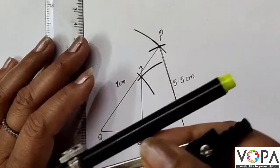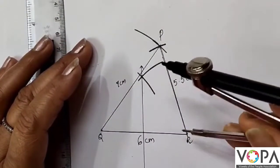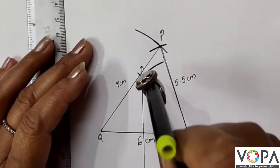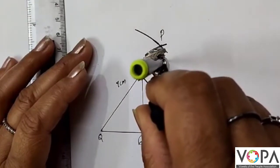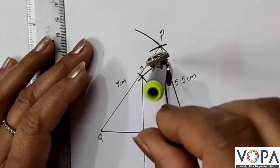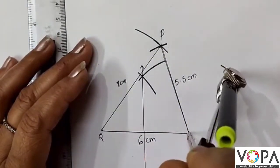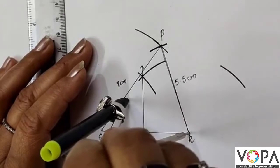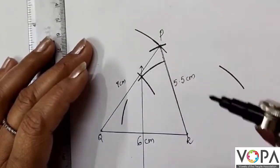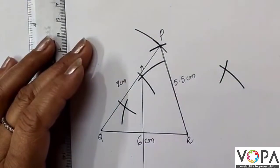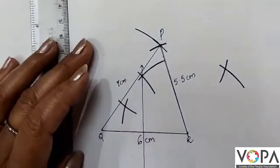Then for PR or PQ, any one side's perpendicular bisector we have to draw. So I am going to draw PR's perpendicular bisector from here. Cut in this way and from the other side also. Now join them.